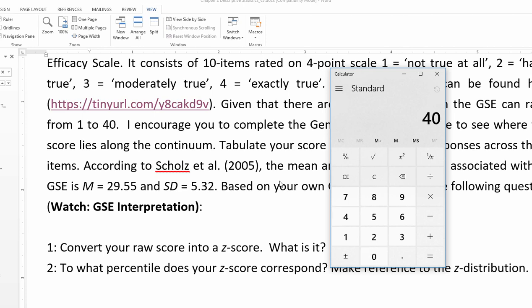You subtract the mean which is 29.55 equals 10.45, and then you divide by the standard deviation 5.32 and you get a z-score of 1.964.